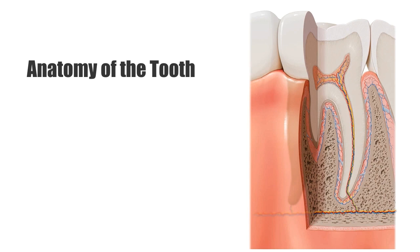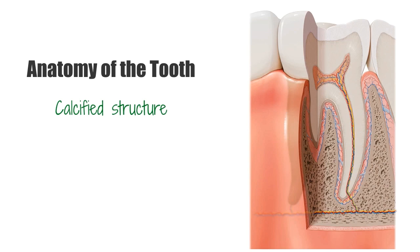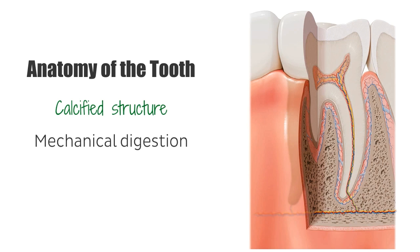A tooth is a small, calcified structure located within the jaw of human beings. From a histological point of view, the tissue composition of the tooth is found normally only within the oral cavity and is limited to the dental structures. The main function of the tooth is to break down food into smaller pieces in a process called mechanical digestion, and it's therefore considered to be part of the upper digestive system.